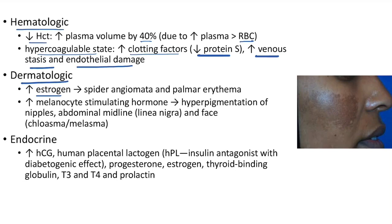Dermatologic changes: increase in estrogen leads to formation of spider angiomata and palmar erythema. Increase in melanocyte-stimulating hormone leads to hyperpigmentation of nipples, abdominal midline, and face. Hyperpigmentation of the abdominal midline is called linea nigra, and hyperpigmentation of the face is called chloasma or melasma. This picture shows a case of chloasma or melasma.